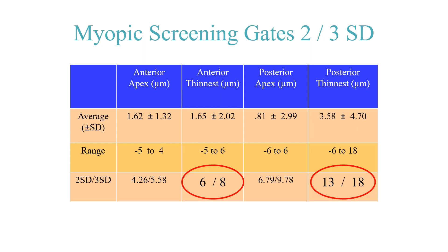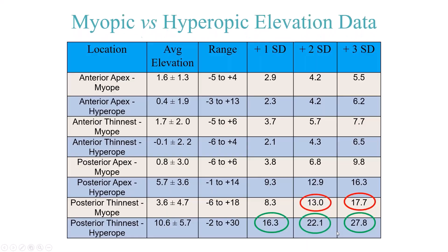Why add a separate database for hyperopic eyes? The original database was based on myopic patients. Looking at posterior elevation at two and three standard deviations for myopic eyes versus hyperopic eyes, the numbers are dramatically larger for hyperopics. For example, posterior values of 6 and 8 microns for myopics compared to 13 and 18, or 22 and 28 microns for hyperopics. So a separate hyperopic database was generated. The hyperopic database should be used for any meridian that is hyperopic, including mixed cylinder patients.